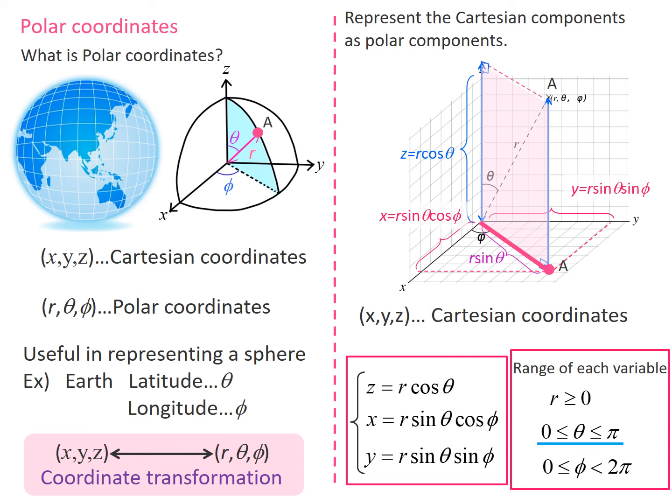Phi corresponds to the longitude, and the range is from zero to two pi.